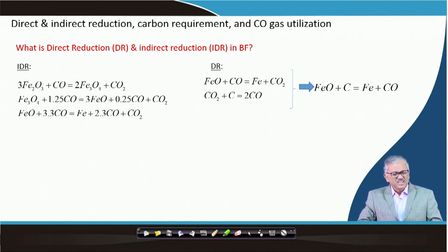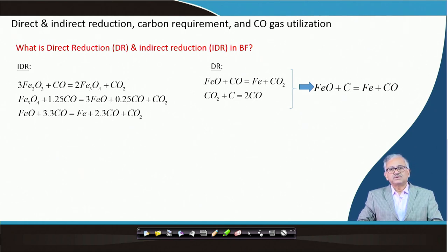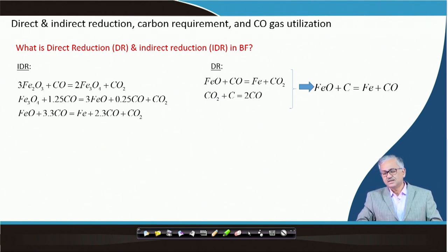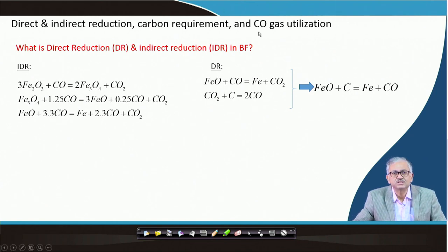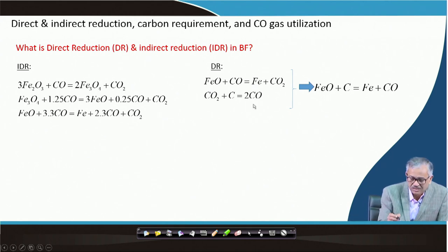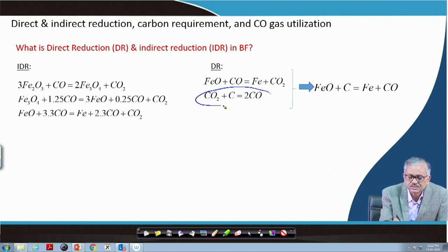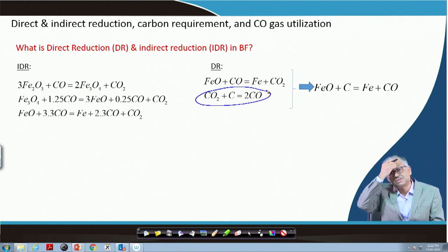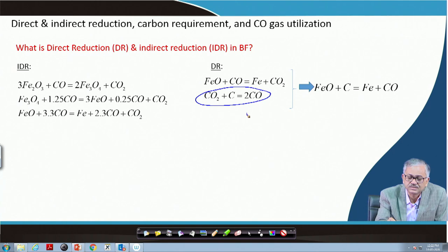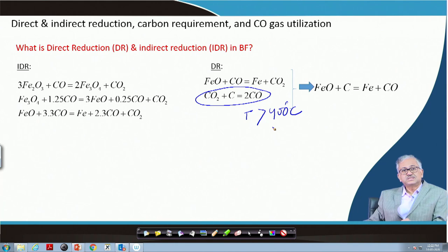That means CO is not generated by in-situ carbon gasification reaction. In the blast furnace, in the upper part of the furnace where temperature is less than 900°C, this carbon gasification reaction does not take place. This reaction only takes place at high temperature — temperature greater than 900°C is required for carbon gasification to occur.